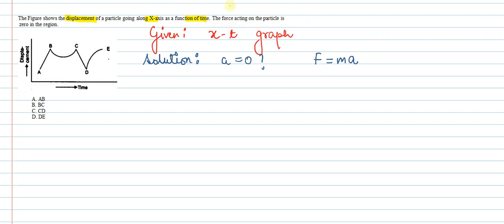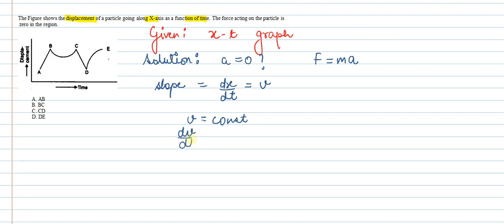Let's first talk about region AB. AB is a straight line. In an x-t graph, when there is a straight line, it means velocity is constant. The slope dx/dt is equal to velocity V. If AB is a straight line, then velocity is constant, meaning there will be no change in velocity and dv/dt = 0. Since dv/dt equals acceleration, acceleration is zero here.